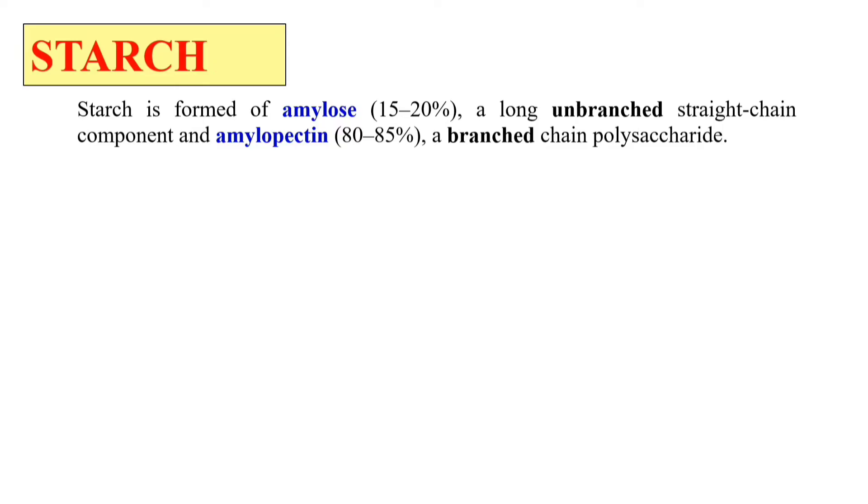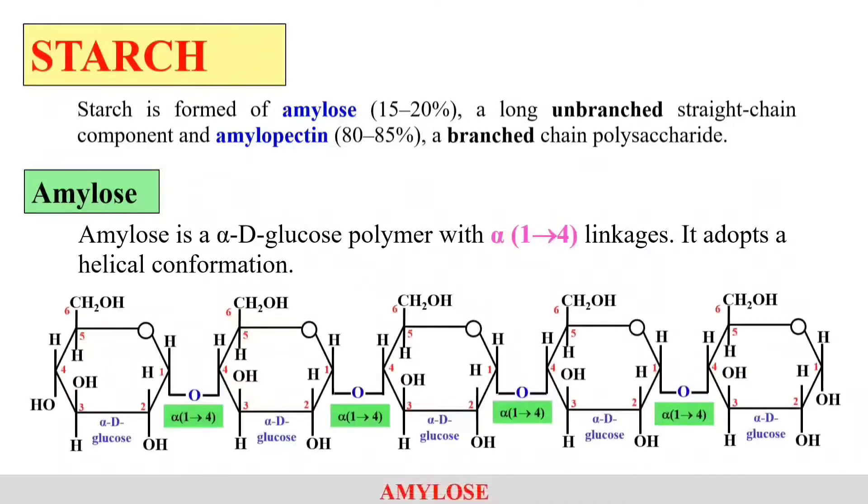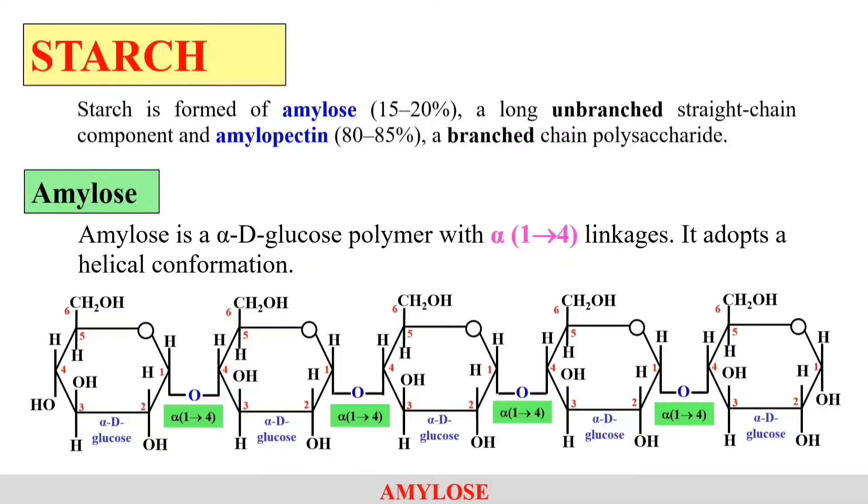Now, first amylose. Amylose is unbranched, a straight chain structure. Like here, this is the structure of amylose. Thus, amylose consists of glucose molecules which are alpha-D-glucose, and these are attached to themselves by the linkage that is alpha-1,4 linkage.